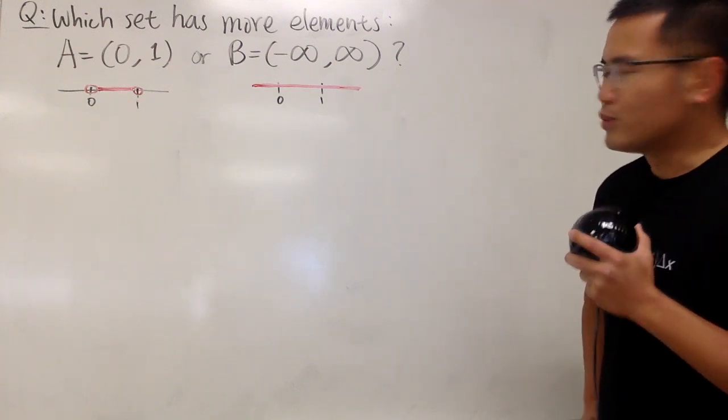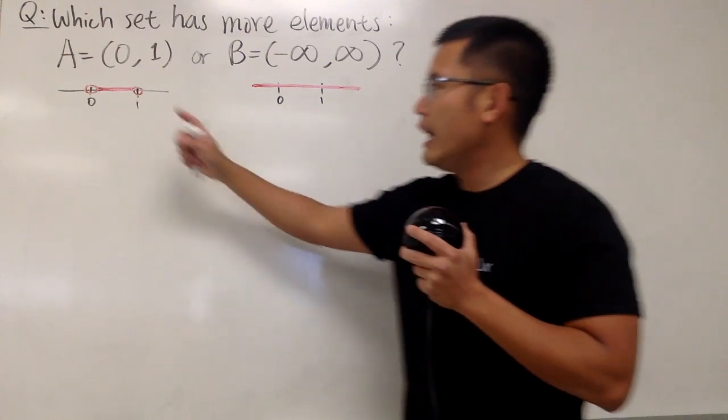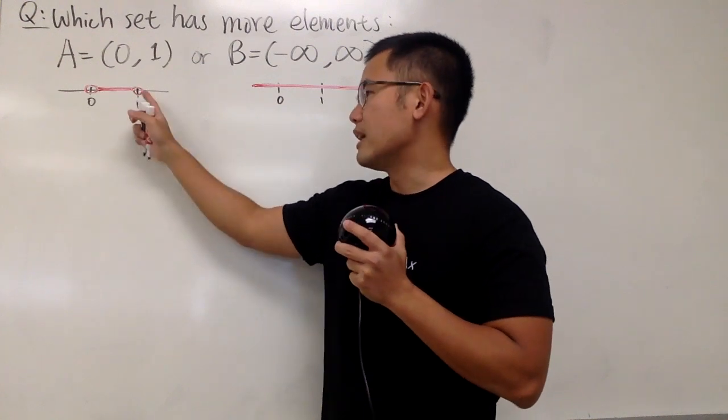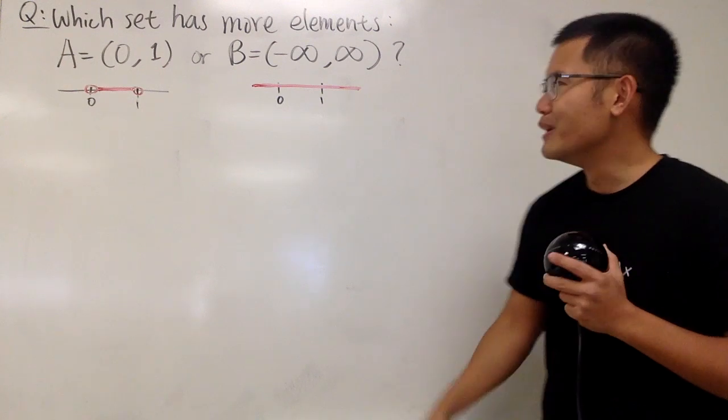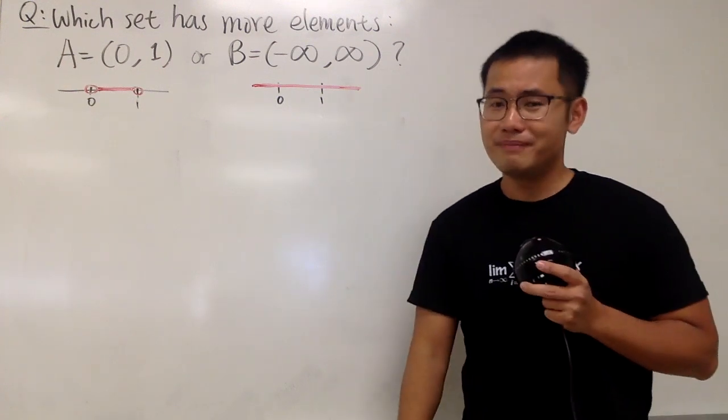Well, isn't this like super obvious? Because as you can see, A doesn't even have 0 and doesn't have 1, but of course B does have 0 and 1, and a lot more. So shouldn't B be the answer? That's it?